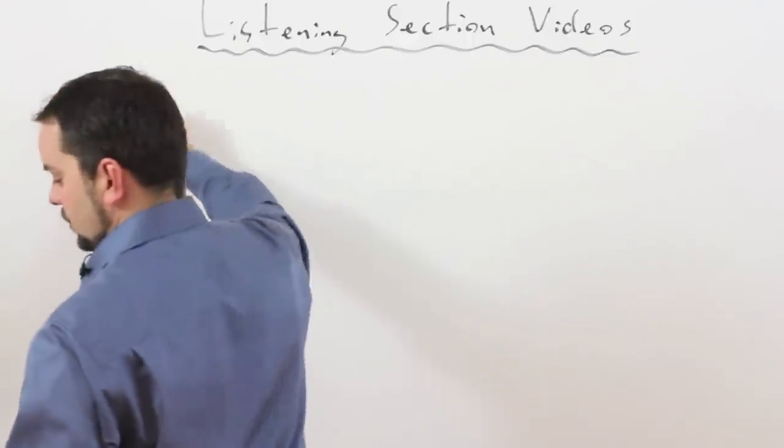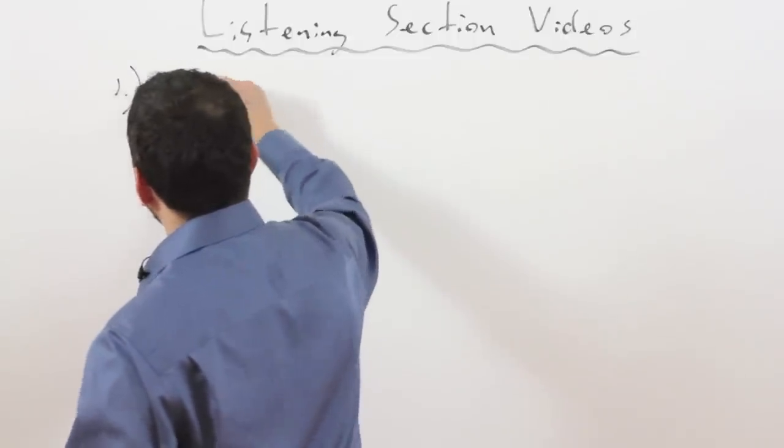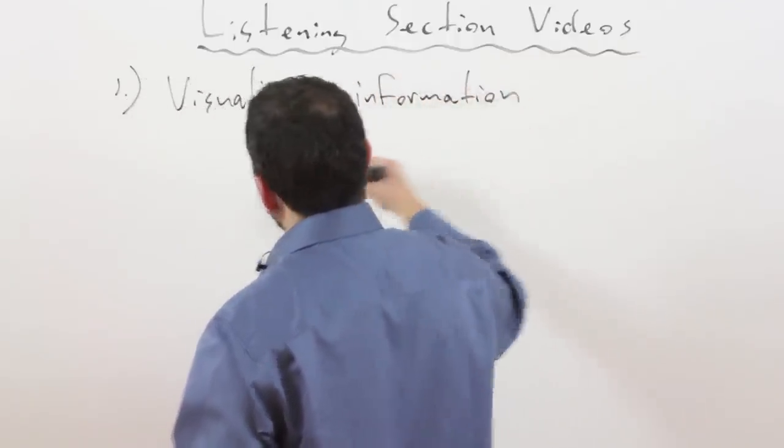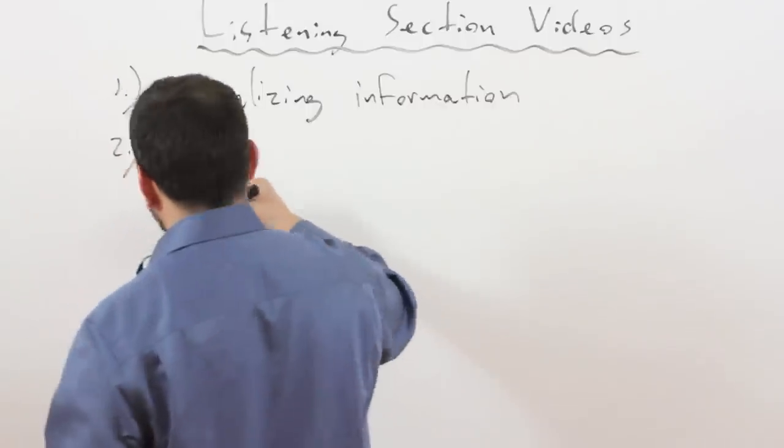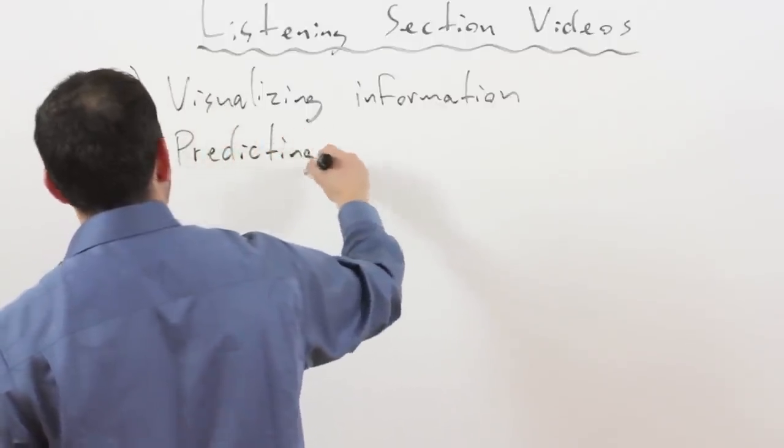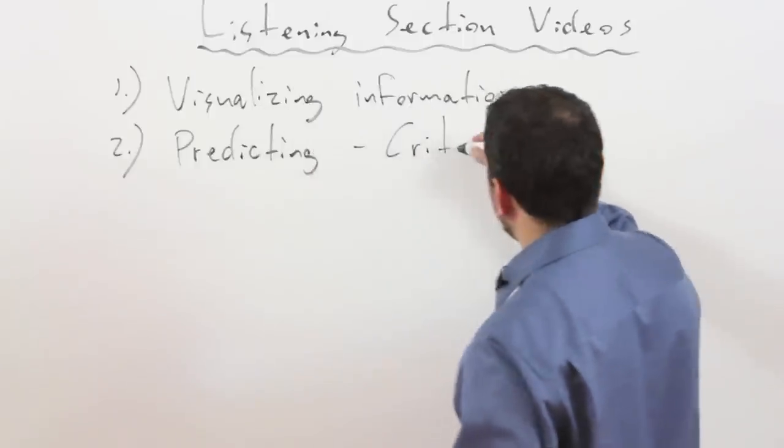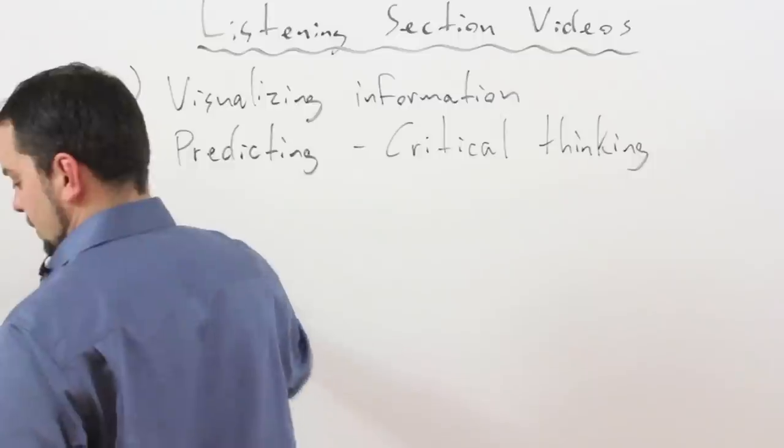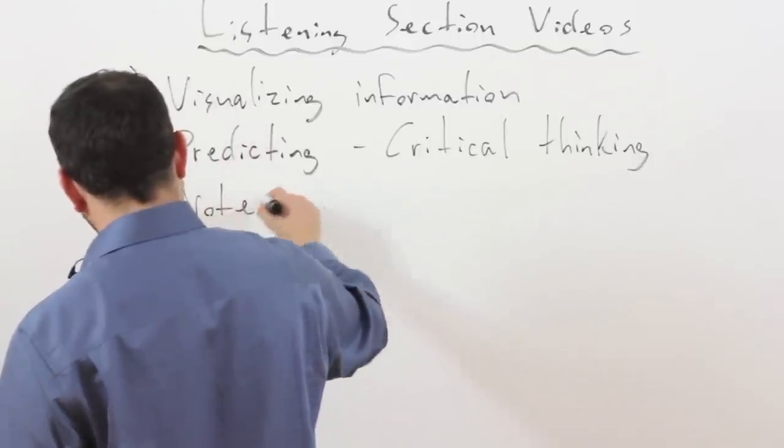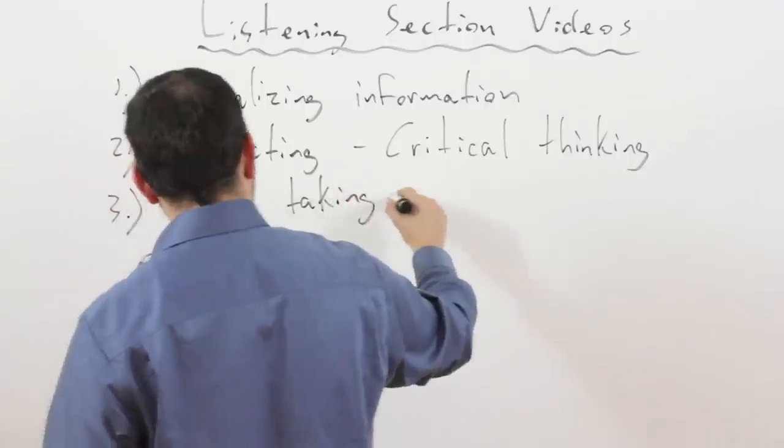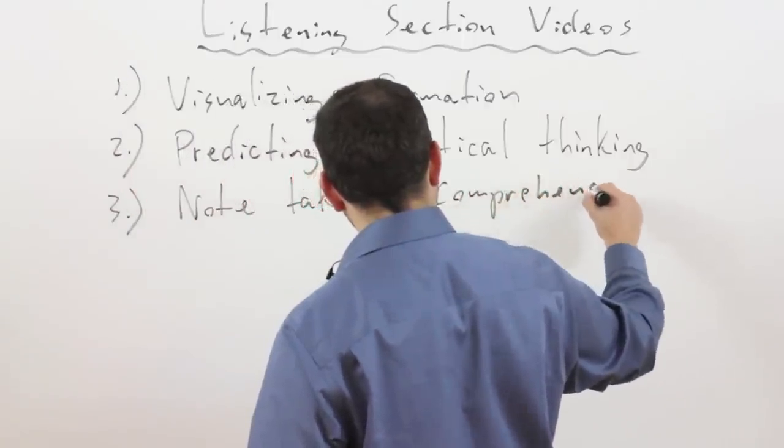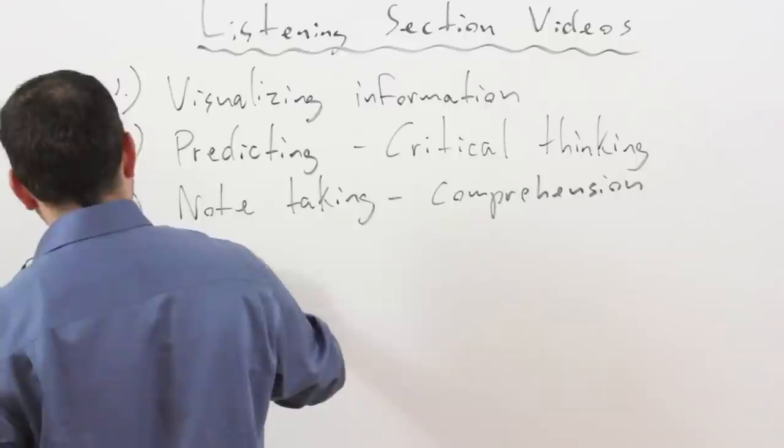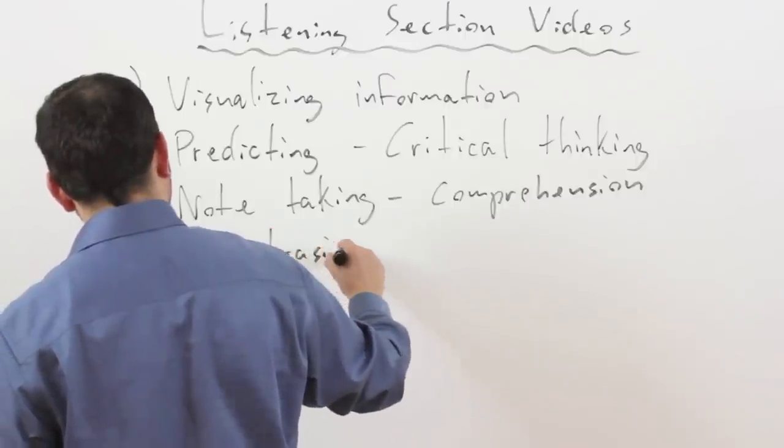The first thing that we're going to look at is visualizing information. The second thing is predicting information using critical thinking.